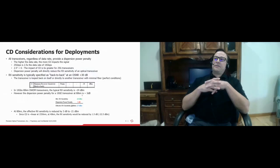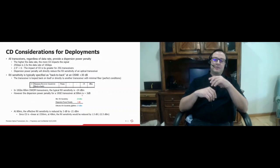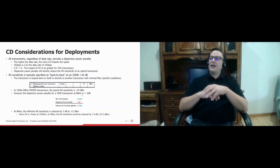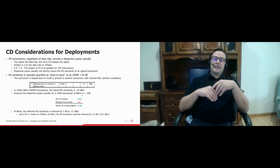The considerations for deployment: all transceivers — although we're going to focus on 10-gigabit transceivers — all transceivers regardless of data rate, whether 100 gig, 40 gig, 10 gig, or 25 gig, are all affected by dispersion. All data sheets should provide a dispersion power penalty. The higher the data rate, the more impact chromatic dispersion has on that signal.